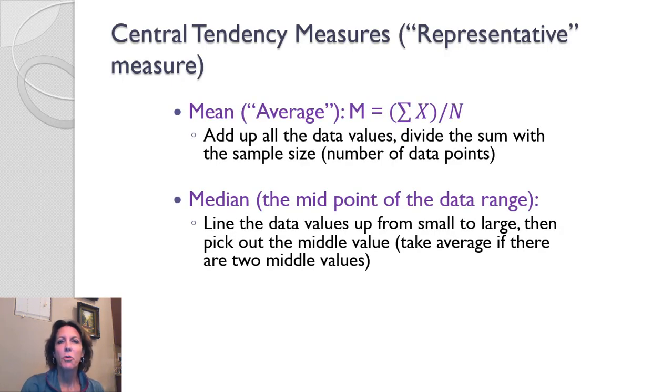We also have another way of representing Central Tendency, and that's the median. That's the midpoint of the data range. Think of that as the geographic middle. It's the line that is exactly in the middle of all of the data values. If you line up all the data values from small to large and you pick out that middle value, that's your median. The best way to think about that is when you're driving on a roadway, there's a median in the middle. It's just dead center, and you have equal numbers of lanes on each side, usually.